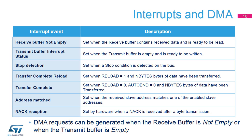Several events can trigger an interrupt. The receive buffer not empty flag is set when the receive buffer contains received data ready to be read. The transmit buffer interrupt status is set when the transmit buffer is empty and ready to be written. The stop detection flag is set when a stop condition is detected on the bus. The transfer complete reload flag is set when the reload bit is set and Nbytes of data have been transferred. The transfer complete flag is set when the reload and auto-end bits are cleared and Nbytes of data have been transferred. The address match flag is set when the received slave address matches one of the enabled slave addresses. The NACK reception flag is set when a not acknowledge is received after a byte transmission. DMA requests can be generated when the receive buffer not empty or transmit buffer empty flag is set.